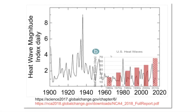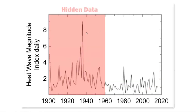I overlaid the part of the graph which went out to policy makers over here in this corner on top of the underlying data, and you can see exactly what they did. The red bars are what policy makers saw, and the extreme heat prior to 1960 is what they didn't see. People may consider this sort of behavior to be shocking, but it's actually standard operating procedure for climate alarmists.